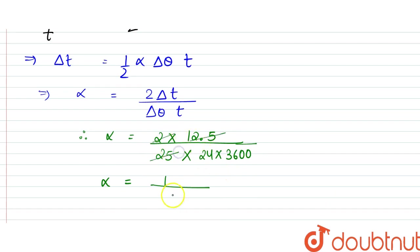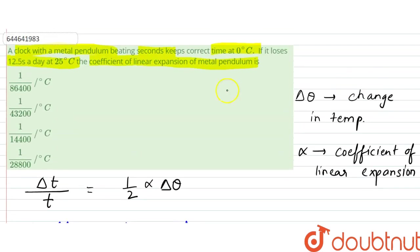2 times 12.5 divided by this gives us 86,400. So our answer is 1 divided by 86,400 degrees Celsius inverse. Option A is our answer. Thank you.